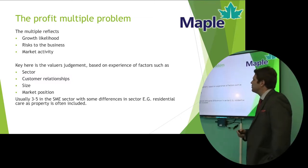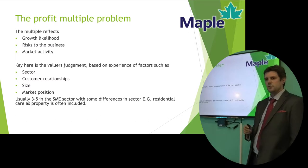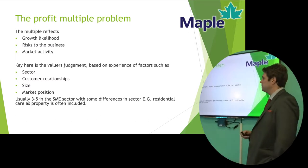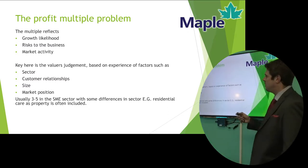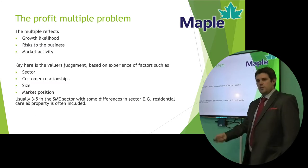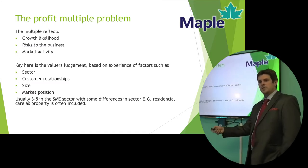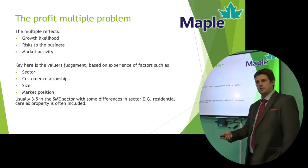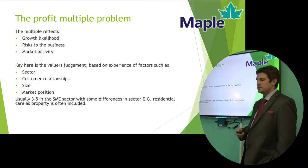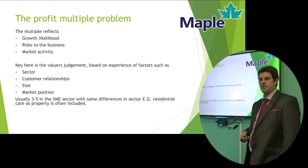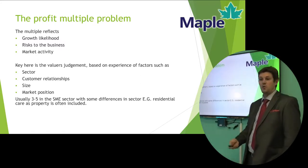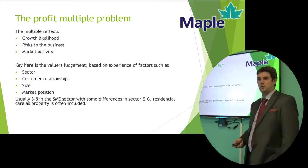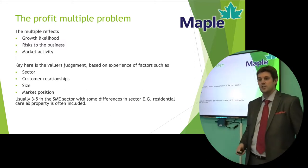There is a bit of a problem with the profit multiple — this is where the judgment of the valuer comes in. The multiple should really reflect the growth likelihood, the risk to the business, and market activity. By growth likelihood, we mean: is it in a sector that's growing? Is the company growing year on year? We'd be likely to increase the multiple in that regard. Risk to the business relates to the sector where the business is operating — if it's a particularly risky or volatile sector, the profit multiple might be lower. And market activity is very similar to the housing market — the more activity in the market, the more the profit multiple is likely to go up because businesses are efficient at high value.